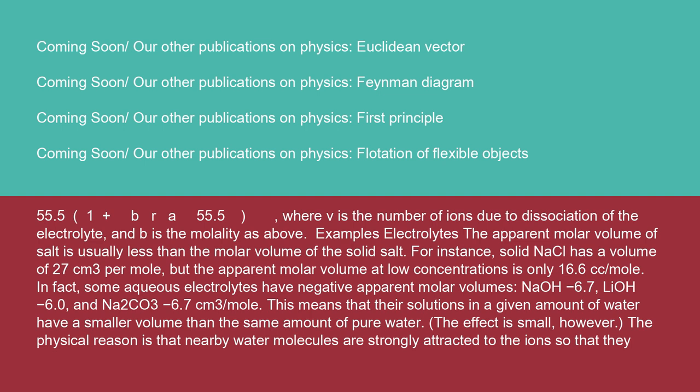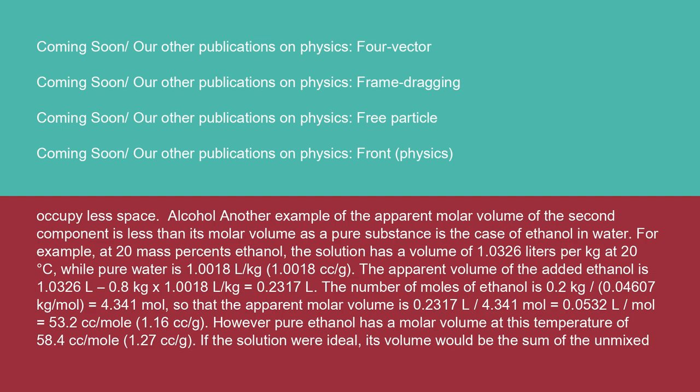Examples — electrolytes: the apparent molar volume of a salt is usually less than the molar volume of the solid salt. For instance, solid NaCl has a volume of 27 cm³/mol, but the apparent molar volume at low concentrations is only 16.6 cm³/mol. In fact, some aqueous electrolytes have negative apparent molar volumes: NaOH (−6.7), LiOH (−6.0), and Na₂CO₃ (−6.7 cm³/mol). This means that their solutions in a given amount of water have a smaller volume than the same amount of pure water. The effect is small, however.